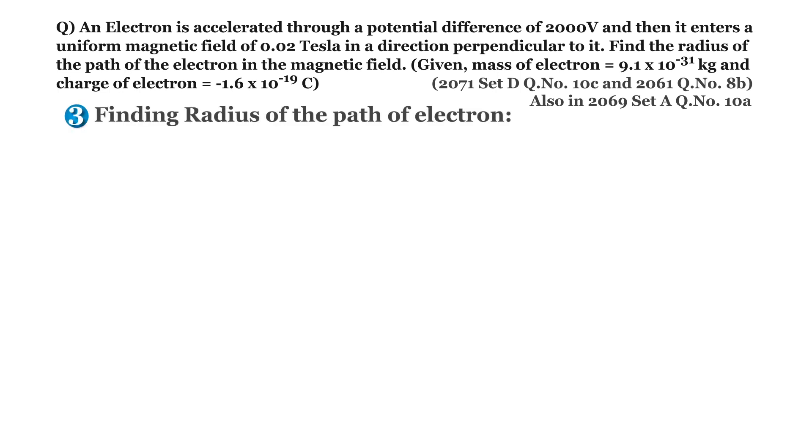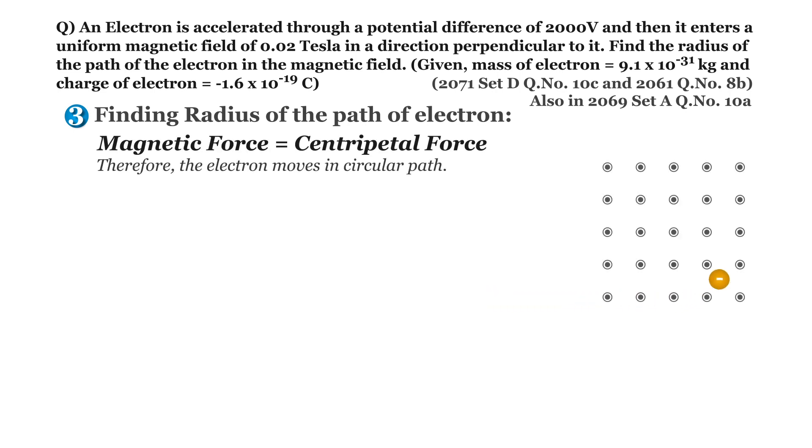Now let's solve for the radius of the path of electron in number 3. As we have discussed earlier, this magnetic force provides centripetal force to electron and therefore the electron moves in circular path as shown in figure. If R be the radius of circular path of electron, then the expression of centripetal force is given by Fc equals m v squared divided by R.